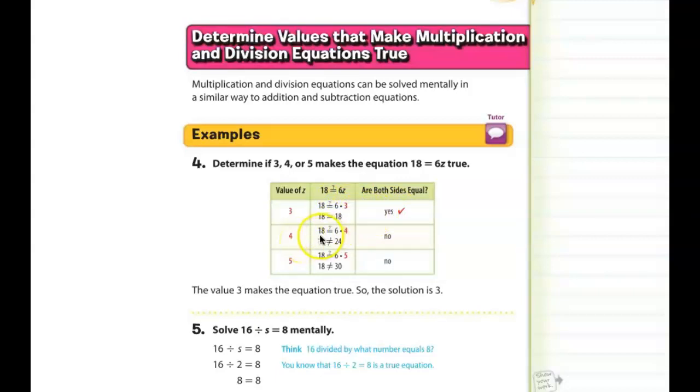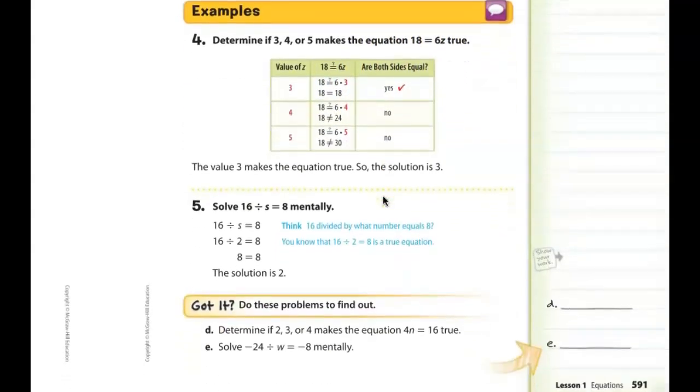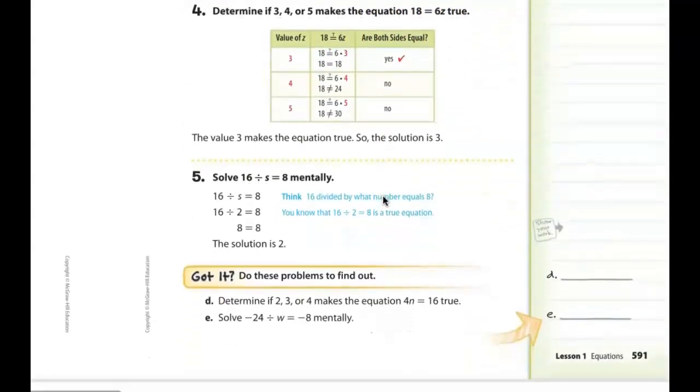If we try the other two, 18 is equal to 6 times 4. 6 times 4 is 24, not equal to 18. 5, 18 equals 6 times 5. 6 times 5 is 30. That's definitely not equal to 18. So you can see how that works. So you just plug the number in where the variable is and see which one makes the equation true. And again, equations only have one actual answer. So only one number will actually work.